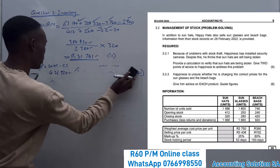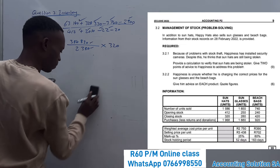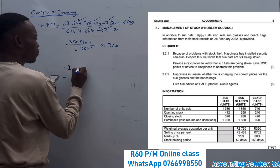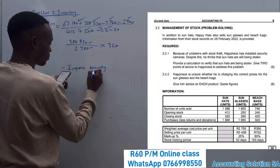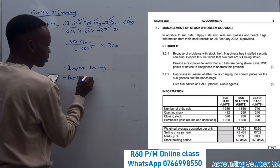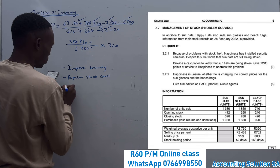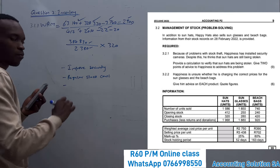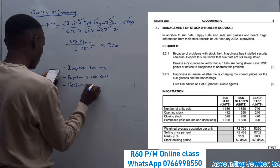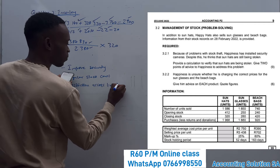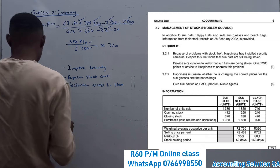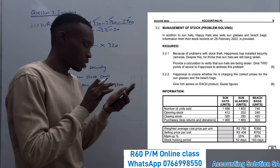Now two pieces of advice. Number one: we must improve security. Number two: we must have a regular stock count. Number three — and they only asked for two but here's a bonus — we must have restriction of access to the store room where we keep our stock. We have to make sure no one just enters there.